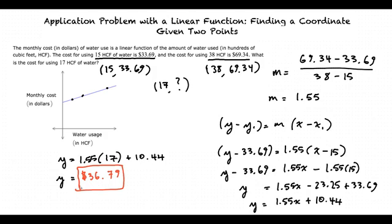And that's how you can find an equation of a line with any two points on the line, which you can then use to find any other point on the line.